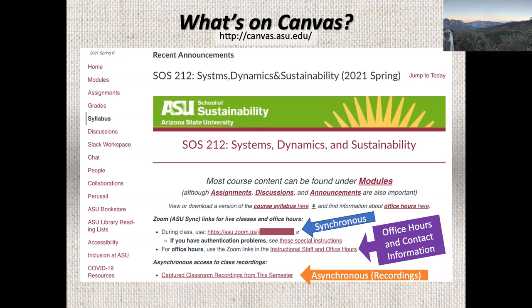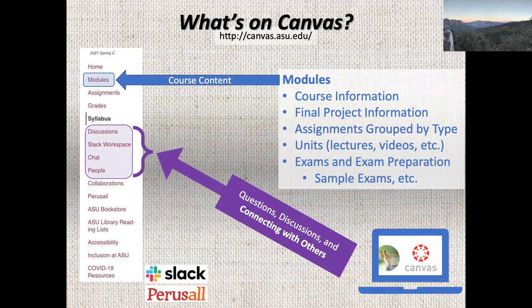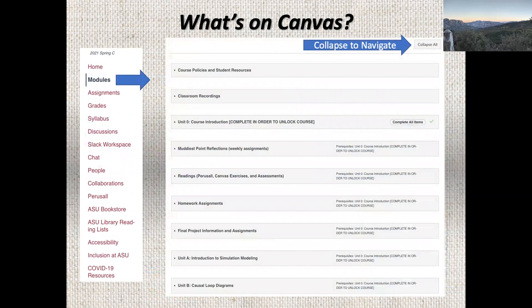Jorge will have his contact info on the Canvas page. There are a number of other ways to connect with each other and with us — discussions, Slack, direct message. There's a people link where you can find others in the class, useful when we start talking about final projects. Most of what you'll find in Canvas for this course is going to be under Modules. I recommend when you go into Canvas, hit Collapse All first to collapse the individual modules down, because when they're all expanded it just looks like a lot.